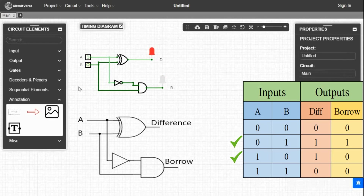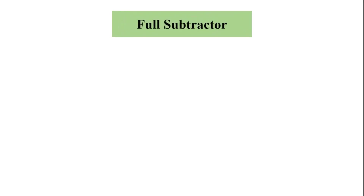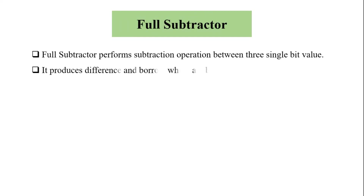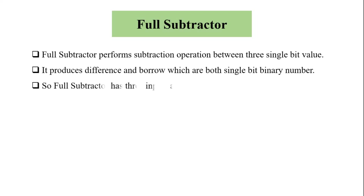By this process you can verify the truth table. Now we will perform the full subtractor circuit. Full subtractor performs subtraction operation between three single bit values. It produces difference and borrow, which are both single bit binary numbers. So full subtractor has three inputs and two outputs.